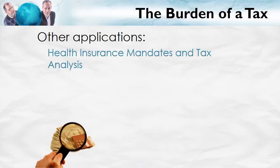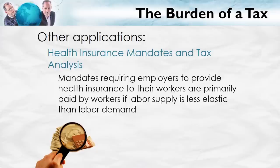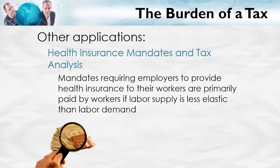Here's one more application: health insurance mandates. Suppose the government requires employers to provide health insurance to their workers, as is now the case for many employers under the Affordable Care Act. Who will end up paying for this — primarily the employers or primarily the workers? It's really just the same analysis as before. A health insurance mandate is quite similar to a tax — it simply means that the employers have to pay a higher total wage cost. If labor supply is less elastic than labor demand, which in many cases makes sense, then most of the mandate will actually be paid for by the workers. Real wages will fall. Again, this doesn't necessarily mean the mandate is a bad idea, but it does mean it's not a free lunch for the workers — they end up paying for their health care through lower wages.